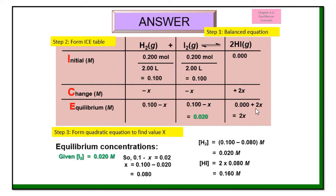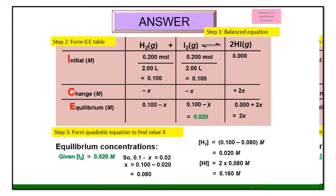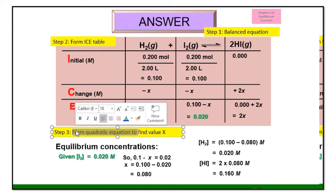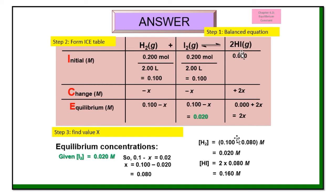The question gives a hint: at equilibrium, the concentration of iodine is 0.02 molar. So 0.1 minus x equals 0.02, which means this part already helps us find the value of x without needing to form a quadratic equation. Solving: x equals 0.08. From here we find the equilibrium concentration of hydrogen is 0.02 molar and the concentration of hydrogen iodide HI is 0.16 molar.